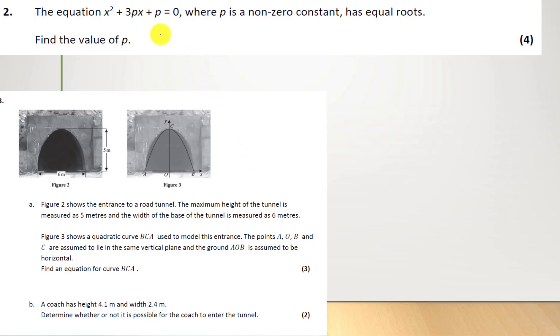Right, remember to pause the video at any point. We've got this equation where p is a non-zero constant. It has equal roots. Find the value of p. So we can use the discriminant. Okay, so that's b² - 4ac equals 0.